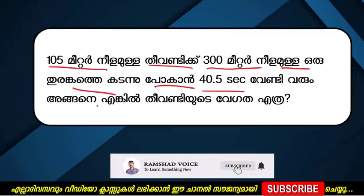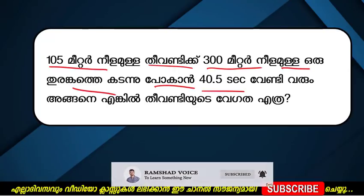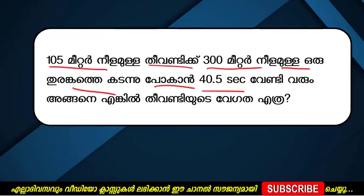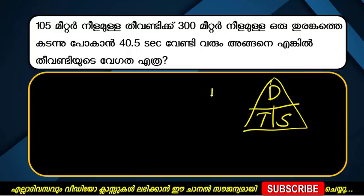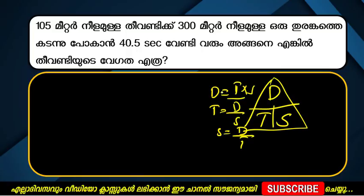Where is T1D? T1D is a problem that we have to do. DTS: D is T into S, T is D divided by S, S is D divided by T. This is the formula. Now we have to find the total distance.